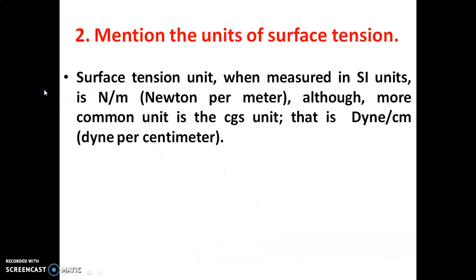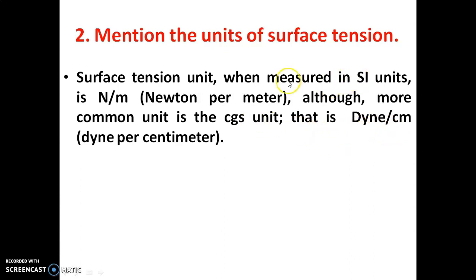Second question: mention the units of surface tension. The SI unit of surface tension is Newton per meter. The CGS unit is Dynes per centimeter.